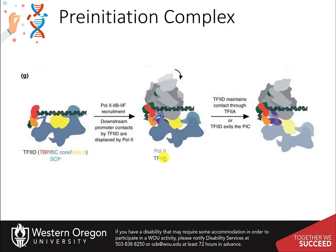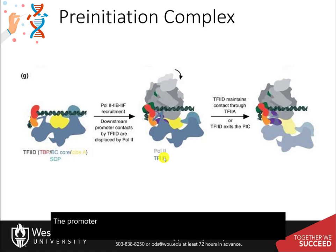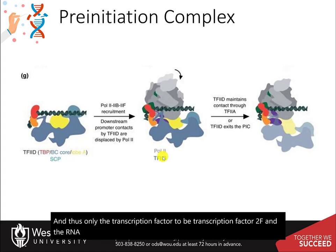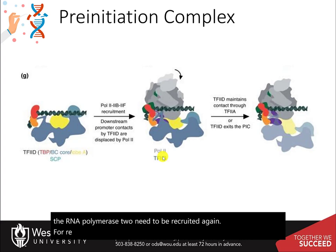The promoter-bound components of the pre-initiation complex remain in place, and thus only transcription factor 2B, transcription factor 2F, and RNA polymerase II need to be recruited again for re-initiation. This significantly increases the transcription rate in subsequent rounds of transcription.